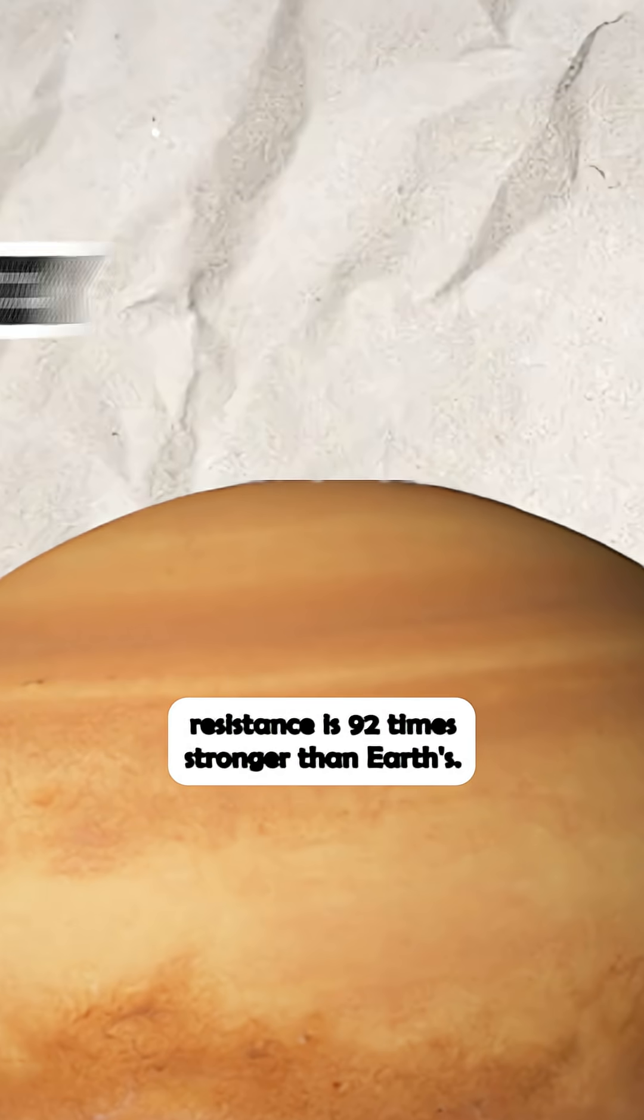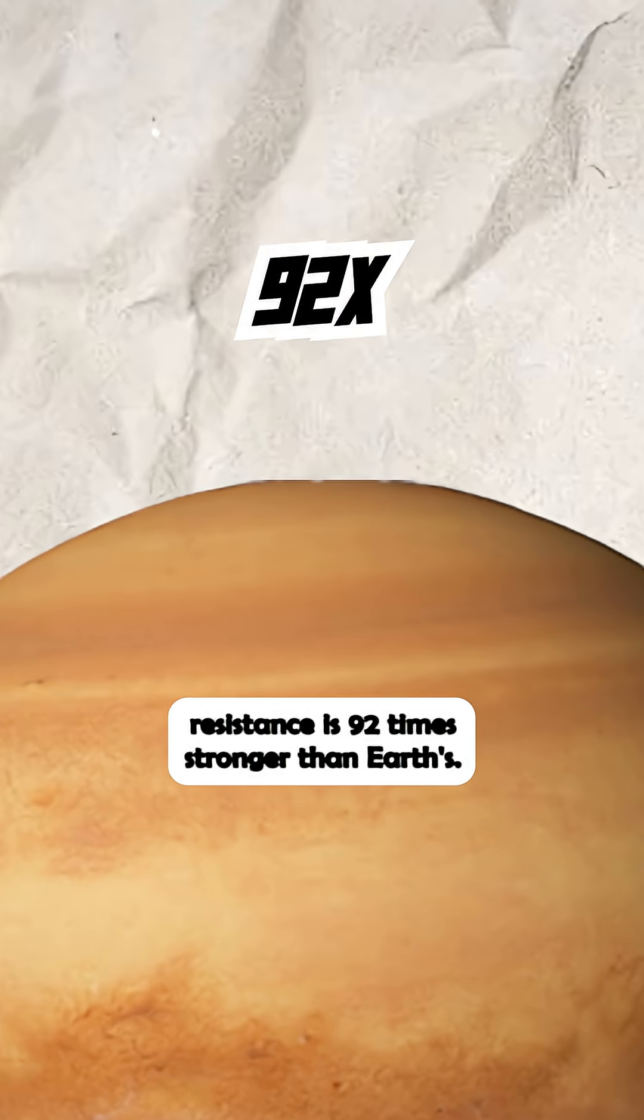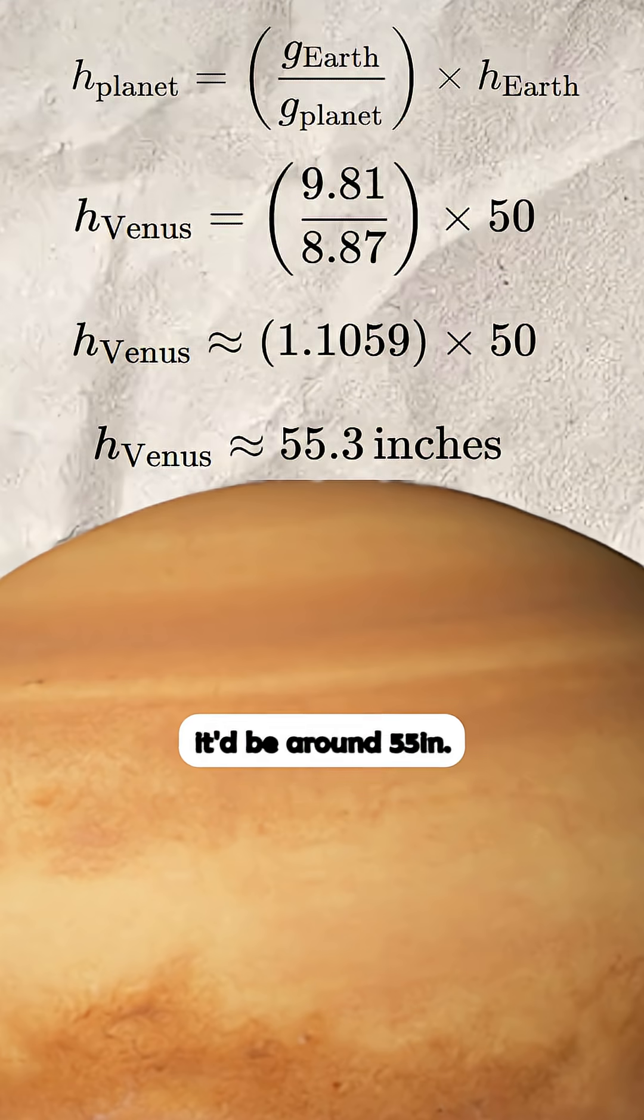For example, Venus's air resistance is 92 times stronger than Earth's. But if we ignored air resistance, it'd be around 55 inches.